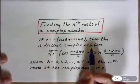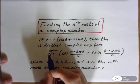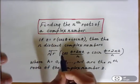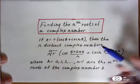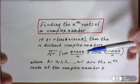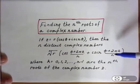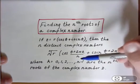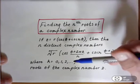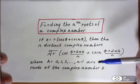The n distinct complex numbers of the nth root of r times cosine theta plus 2π k over n plus i sine theta plus 2π k over n, where k is between 0 and n minus 1, are the nth roots of the complex number z.